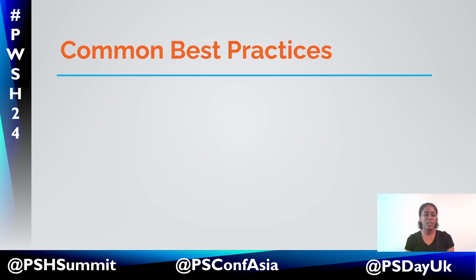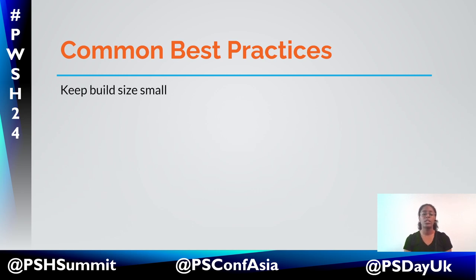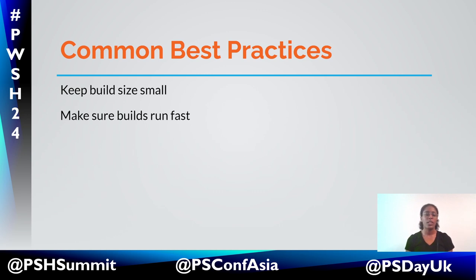To get started, we'll talk about some common best practices in DevOps, in particular CI/CD. The first thing you want to do is always keep your build sizes small. We want them to run as quickly as possible. The whole point of DevOps is to make sure that our changes can get pushed to production really fast without needing a whole lot of manual steps in between.